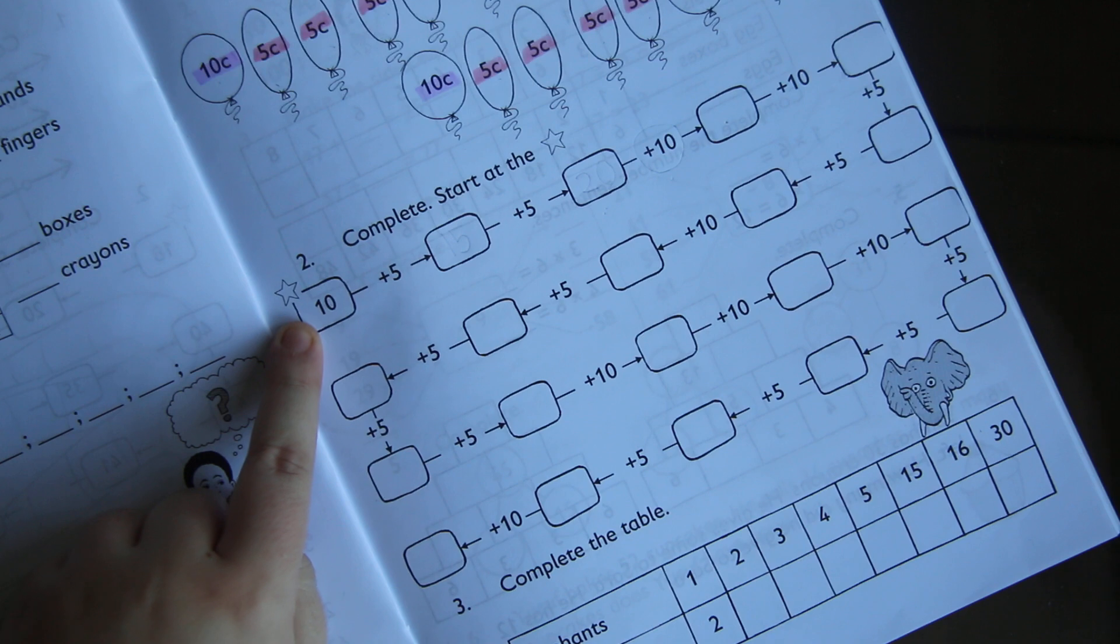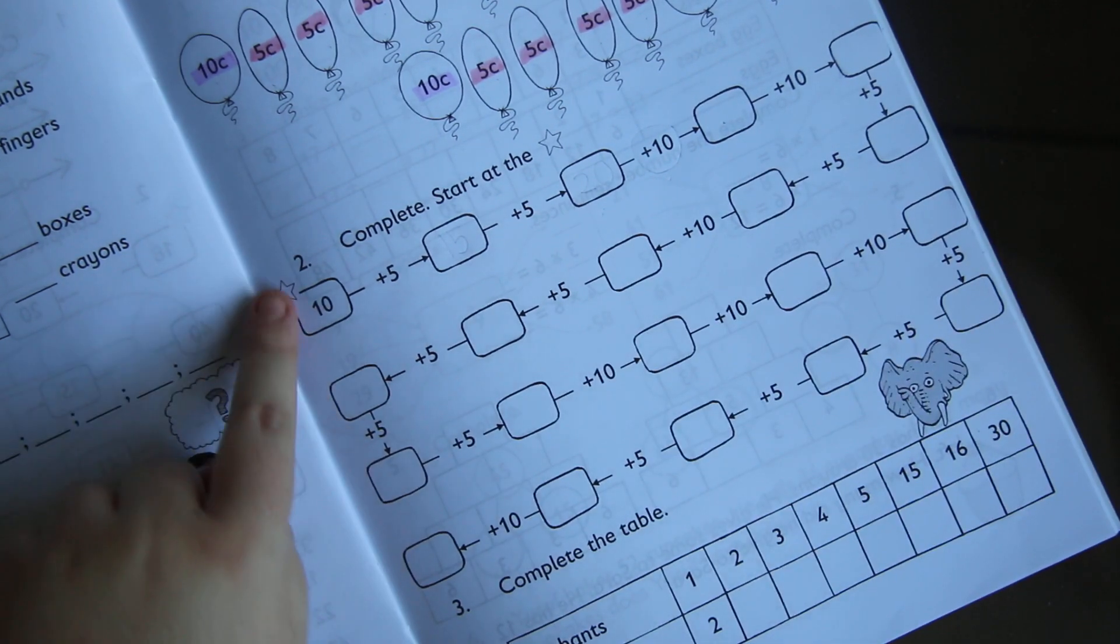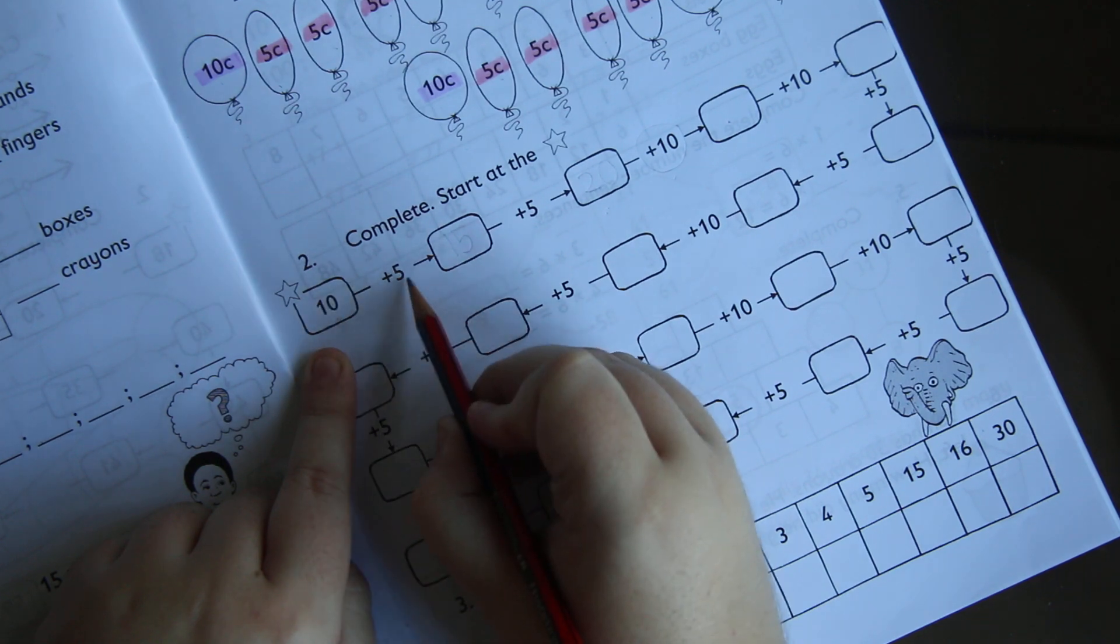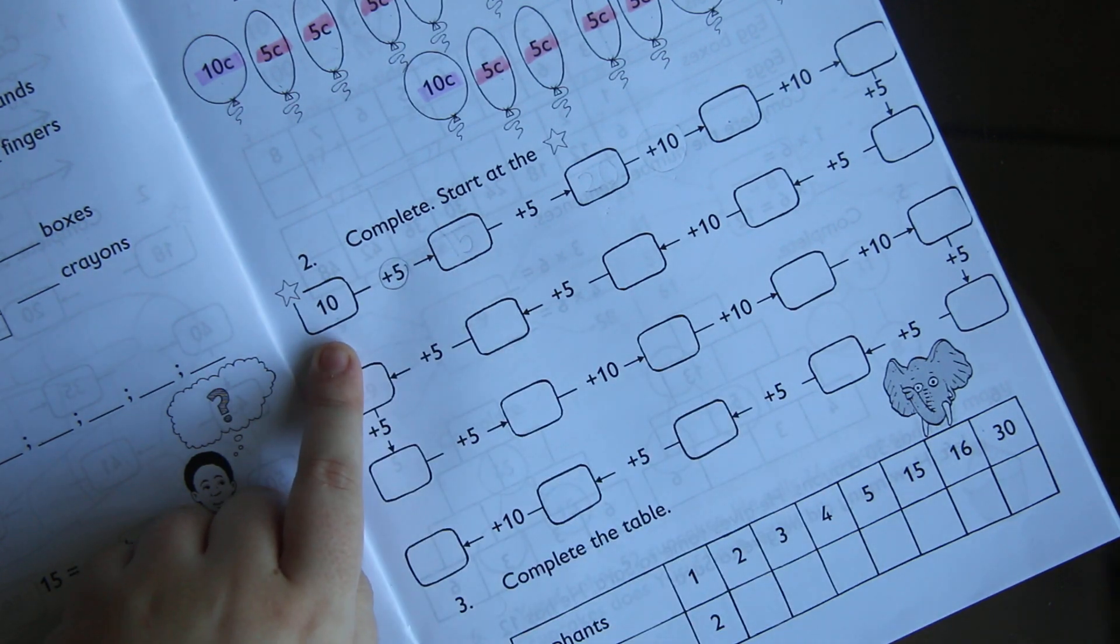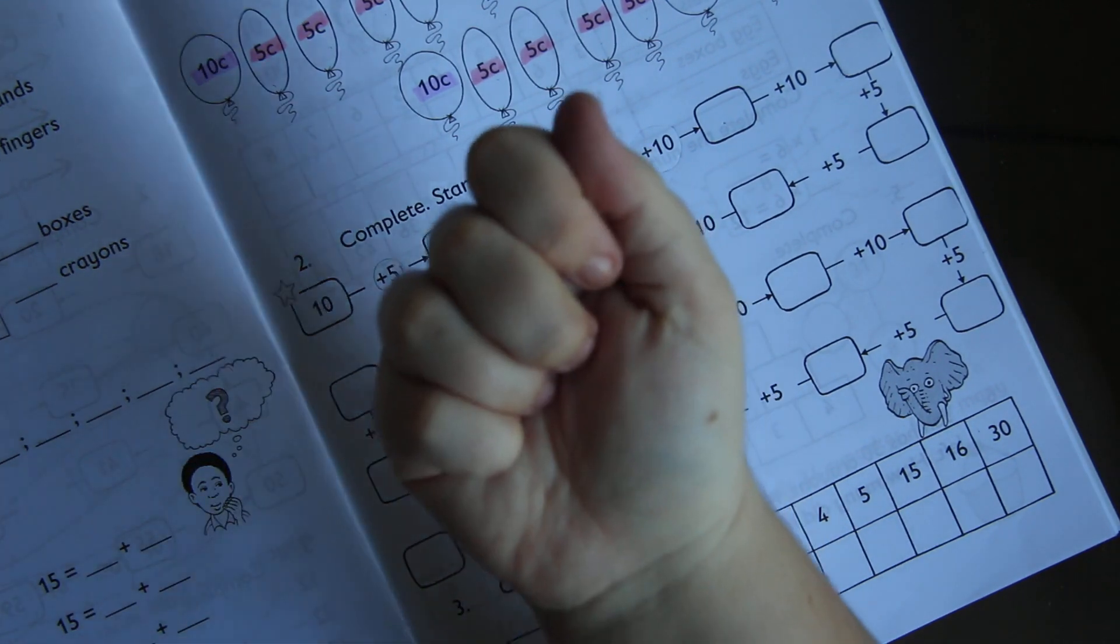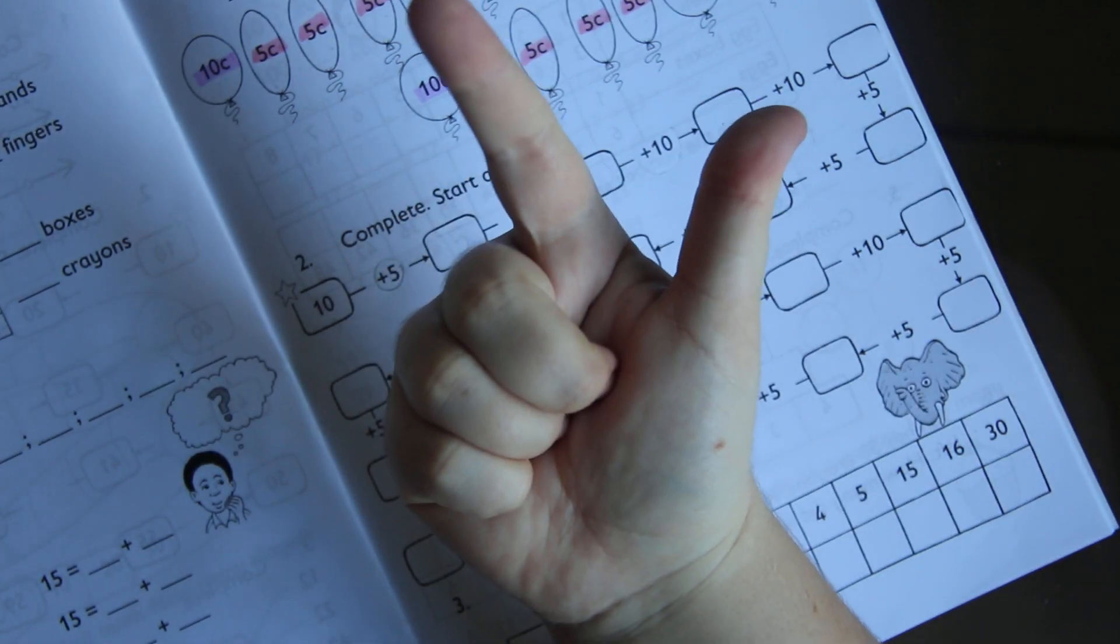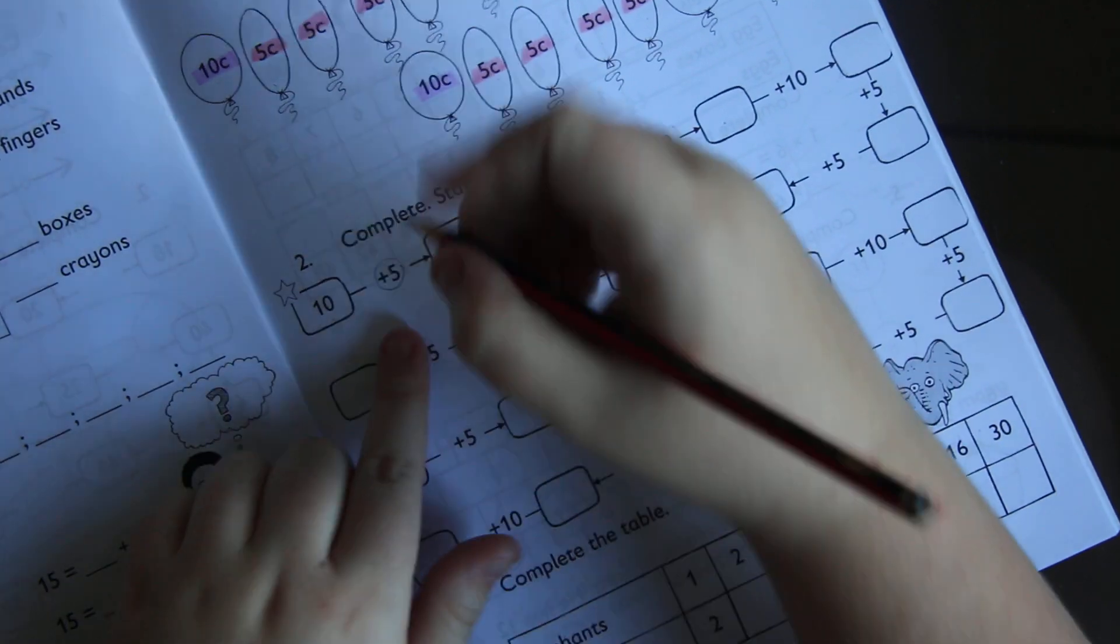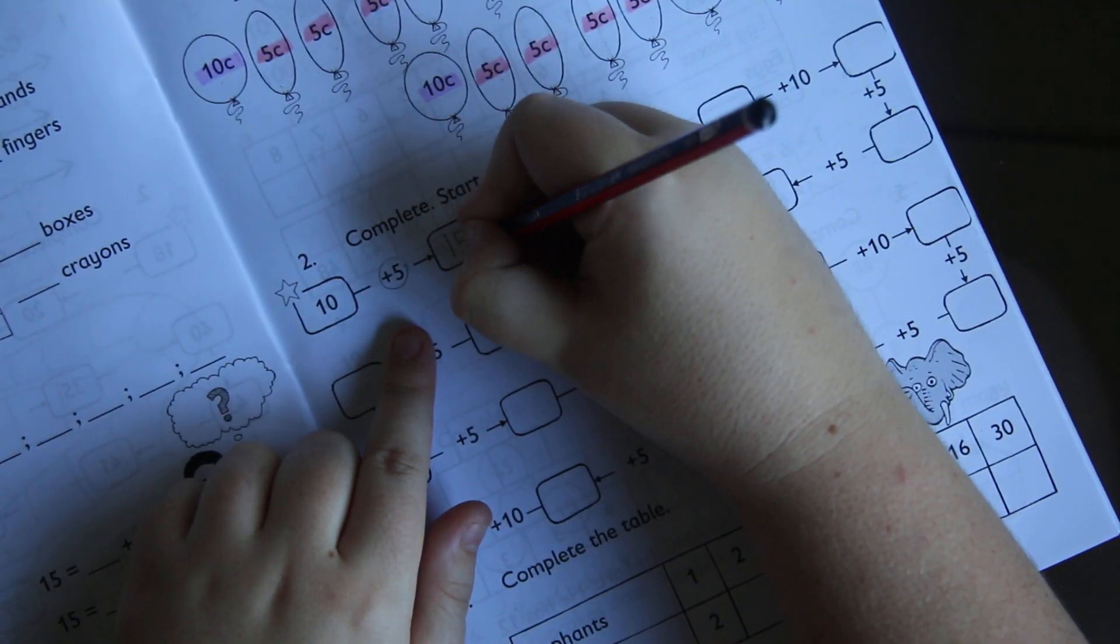So the star is over here by the 10 in the margin of the book. So our first sum is 10 plus 5. What is 10 plus 5? 11, 12, 13, 14, 15. 10 plus 5 is 15.